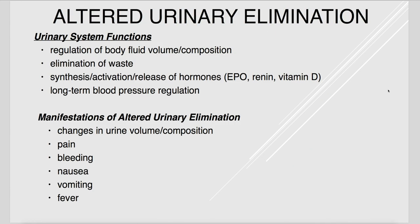Moving to the urinary system, its functions include regulation of body fluid volume — largely through the RAS system — as well as body fluid composition. It handles elimination of waste such as urea and ammonia, and synthesis, activation, and release of hormones like EPO (erythropoietin, needed for red blood cell production), renin (which cleaves angiotensinogen), and vitamin D, which is mostly fully activated in the kidneys. The kidneys also control long-term blood pressure.